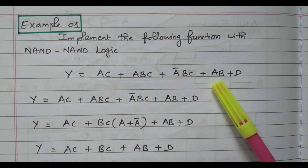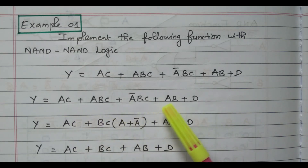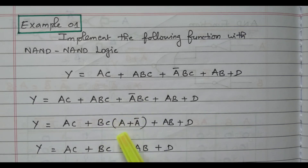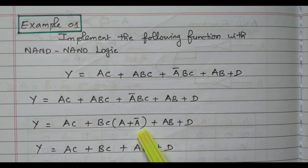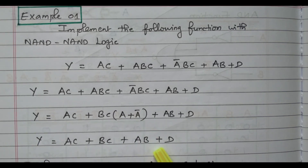We will simplify this expression in order to implement it. So: AC plus ABC plus A-bar BC plus AB plus D. We will take BC outside from the two middle terms where BC is available commonly. If we take BC outside, we have A and A-bar, and A plus A-bar equals 1. So we are left with only BC. Finally we have: AC plus BC plus AB plus D.